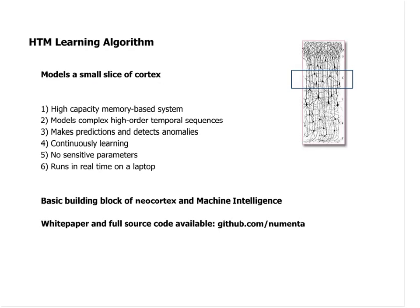We have implemented a small slice of cortex. The implementation we have is a very high-capacity memory-based system that is extremely good at modeling high-order temporal sequences. It makes predictions continuously, can detect anomalies, and is a continuously learning system. This algorithm has very few sensitive parameters, meaning you don't really have to tweak or tune the system as you change domains. The current implementation — a tiny part of cortex — runs in real-time on a laptop, modeling about 65,000 cells and hundreds of thousands of connections. The full source code is available on GitHub.